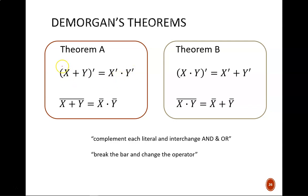Theorem A shows the case where the multiple variables are being ORed. Theorem B shows the multiple variables being ANDed. The two equations in each box are identical. They simply use the alternative notations for complementing, apostrophe up top, overbar down below.